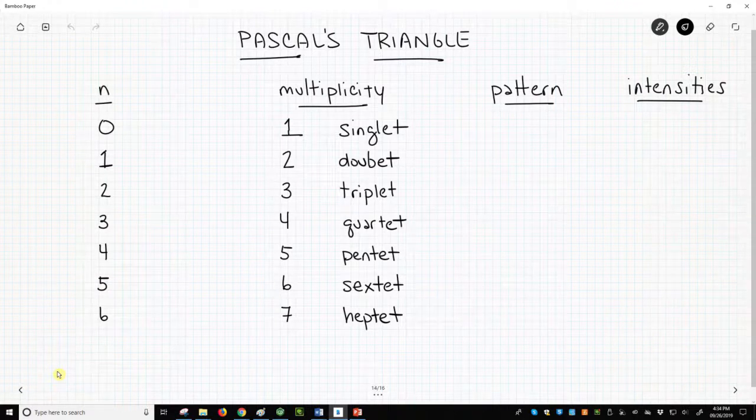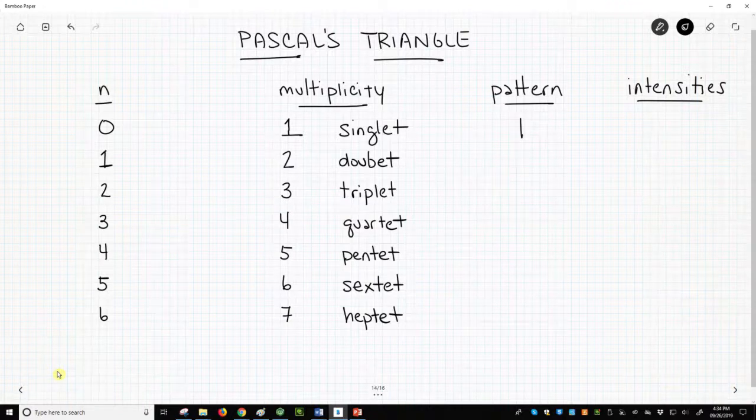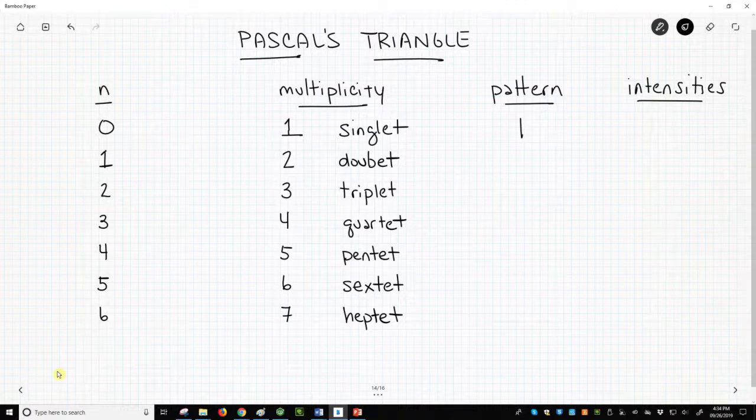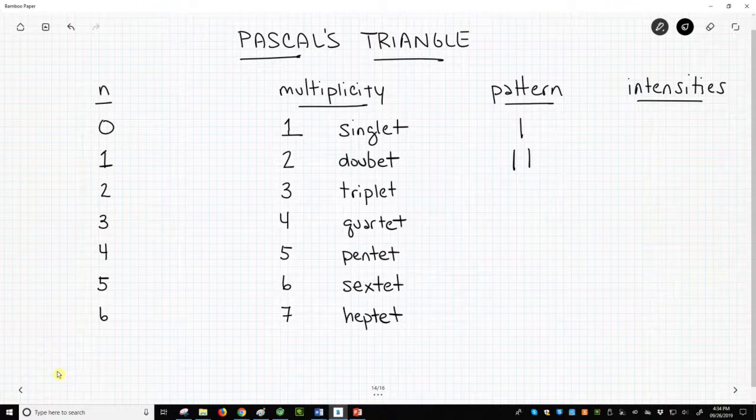The singlet, multiplicity of 1, is a single line. There's really not much to talk about in this single line. The doublet, multiplicity of 2, is 2 lines of equal intensity.